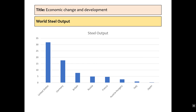Secondly, we've got world steel output. We can see that America dominates with 31.5 million tonnes produced each year, again surpassing Germany, Britain, France, and Russia all combined. This output creates a massive increase in the US economy. It can be used internally to build more railroads as well as producing other goods, and it can be sold to countries such as Germany, Britain, France, and Russia when World War I breaks out.